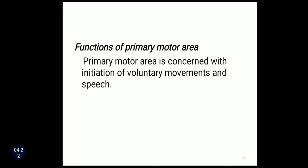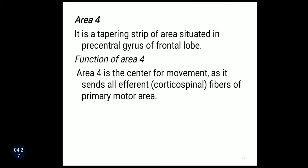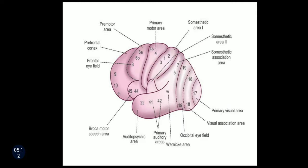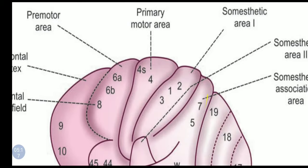Area number four is a tapering strip situated in the precentral gyrus of the frontal lobe. Area four is the center for movement as it sends efferent fibers of the primary motor area — it is mainly a center for movements. Area four S is called the suppressor area. It forms a narrow strip anterior to area four. It scrutinizes and suppresses the extra impulses produced by area four and inhibits exaggeration of movements. Whatever extra impulses are produced by area four are suppressed by area four S.